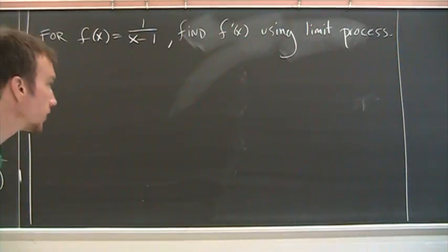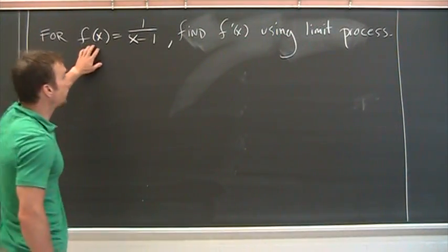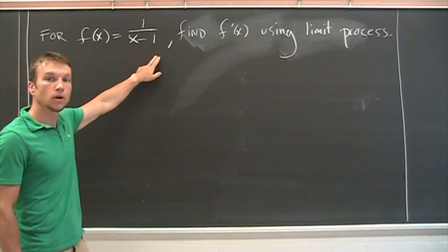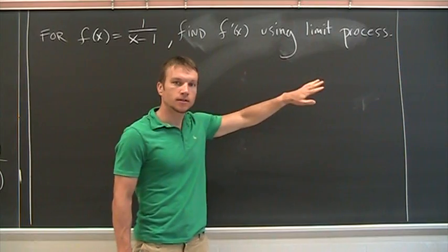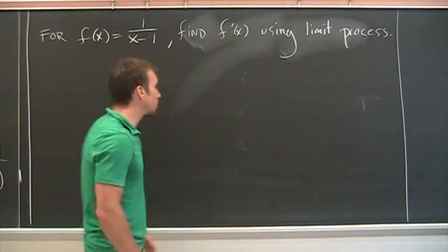Alright, so we want to find the derivative of this function f of x equals 1 over x minus 1 by using what I'm calling the limit process, or the definition of derivative.